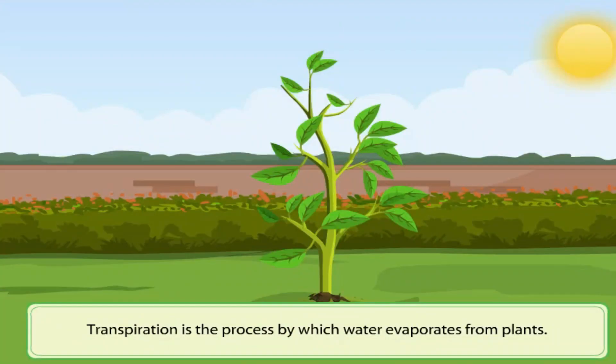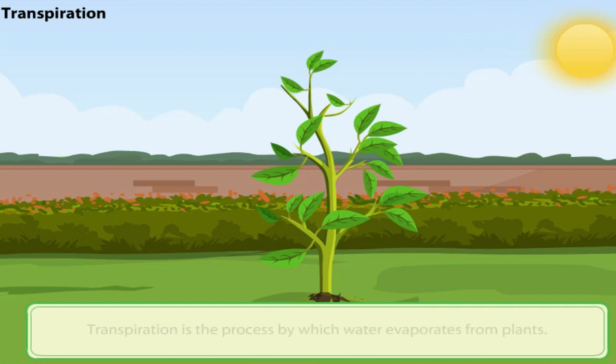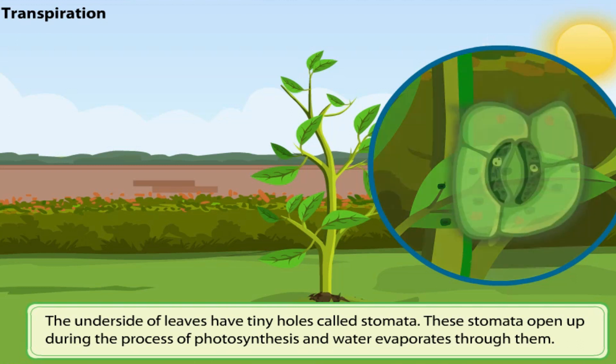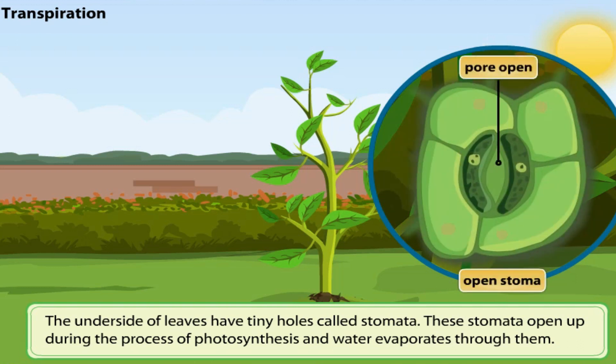Now, let's move on to transpiration. Transpiration is the process by which water evaporates through leaves. The underside of leaves have tiny holes called stomata. These stomata open up during the process of photosynthesis and water evaporates through them.